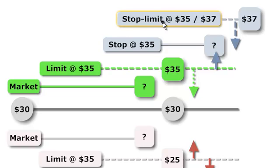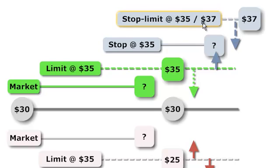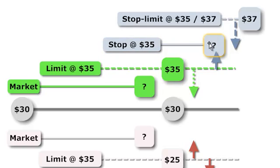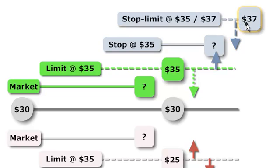Finally, we have the stop and limit, which is a combination of the stop and the limit, and therefore requires two prices. In my illustration, a stop at $35 and a limit at $37. So this means $35 is the trigger — the bid ask spread gets to $35, so it's triggered, and then it becomes a limit order, which means we're willing to pay $37 or better. So we can end up filling the order at $37 or $36.90, for example, but not at $38 because that's not better.